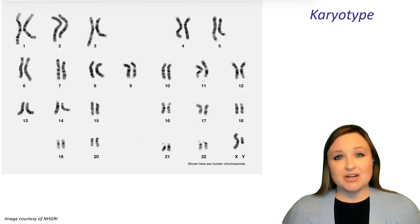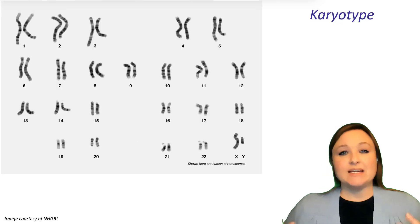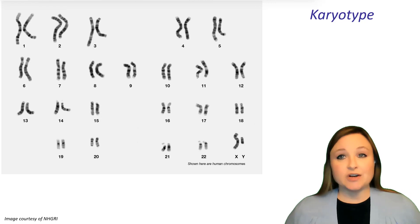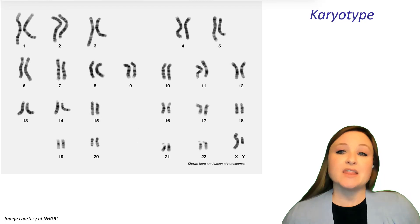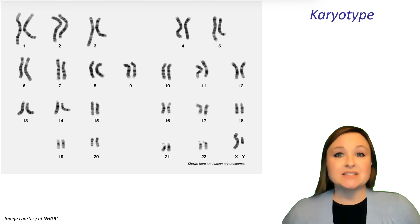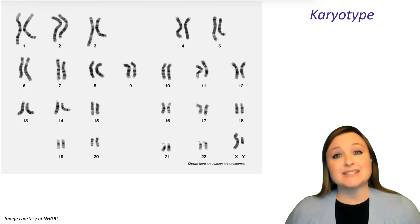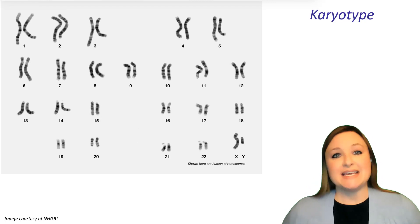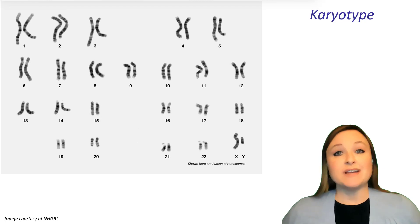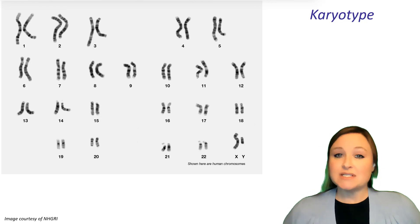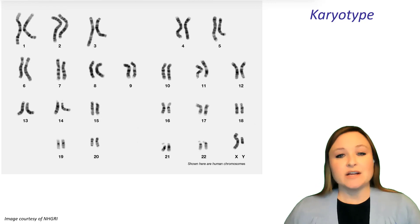So this is a karyotype. In a laboratory, we can take a photograph of all the chromosomes found in a cell during mitosis, and then we can line them up from biggest to smallest. This allows us to see all the chromosomes in a cell. Here we're looking at all the chromosomes of a human cell.